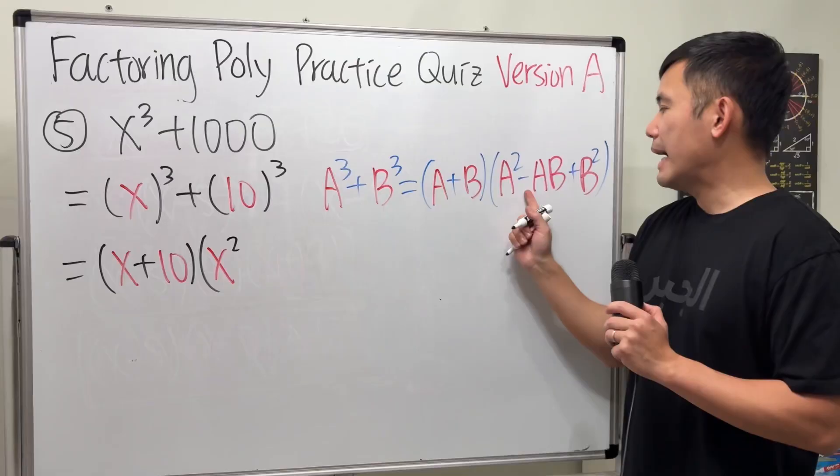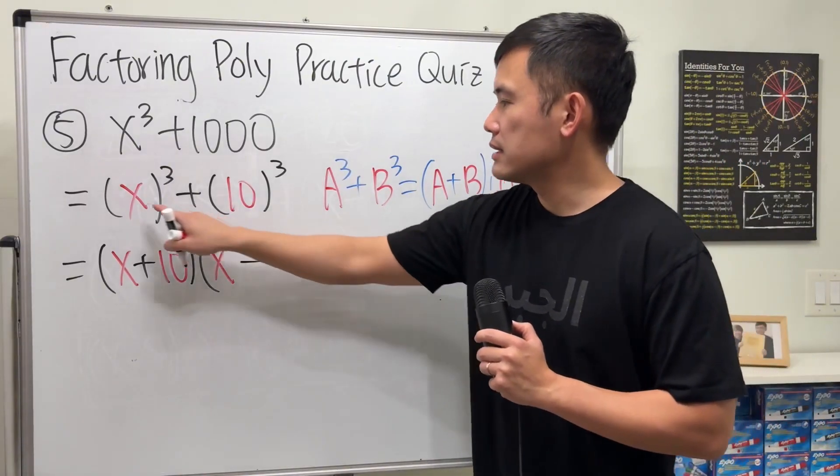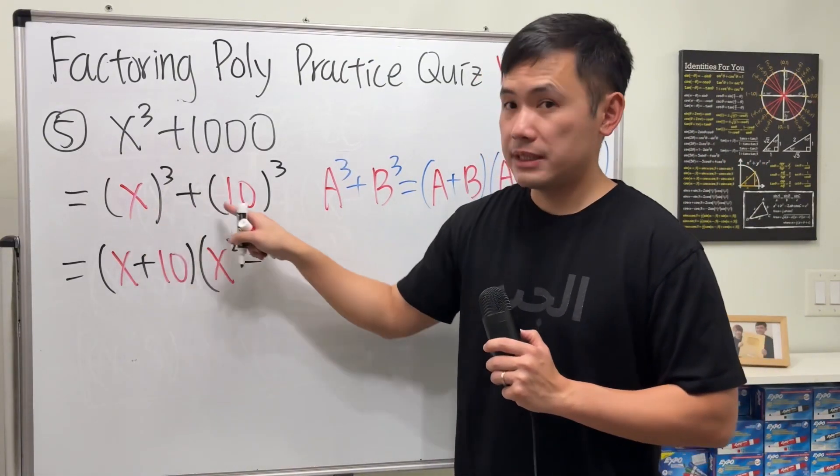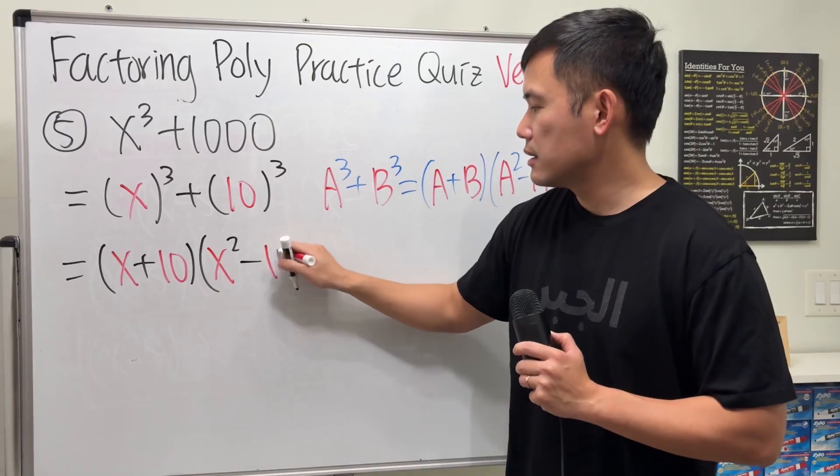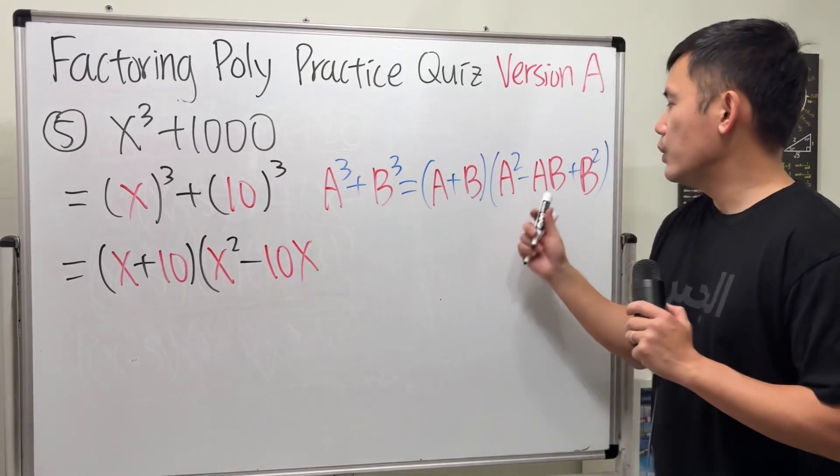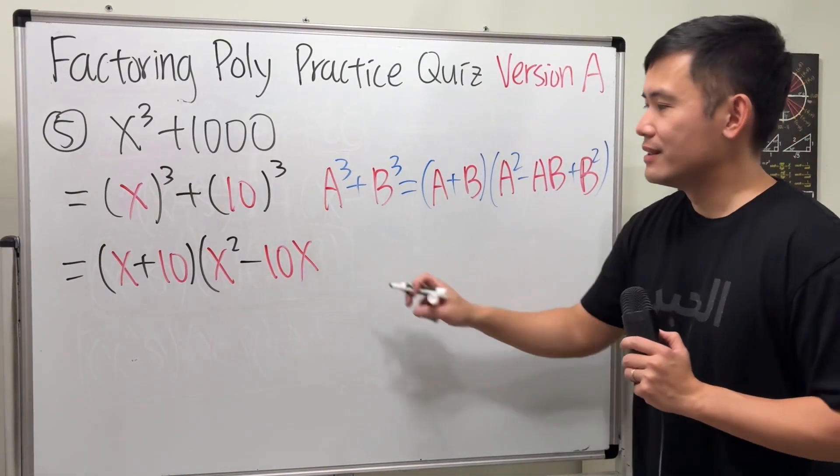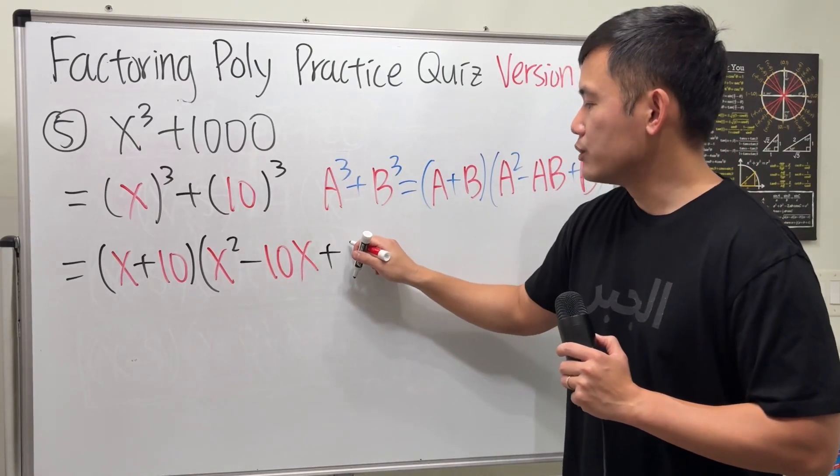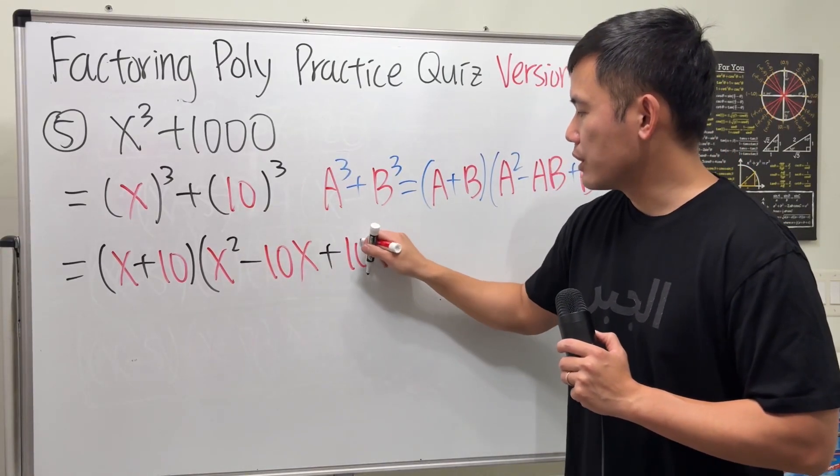And then minus ab, so that's a times b, right, x times 10, which is just 10x. And lastly, we have to add b squared. So, we put plus 10 squared is 100, so I'm just going to write down 100 here.